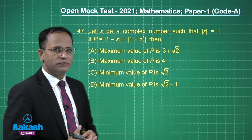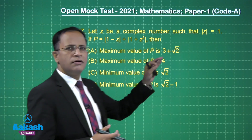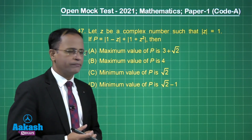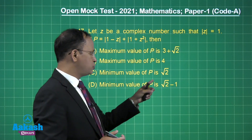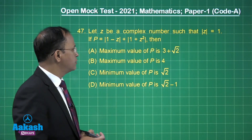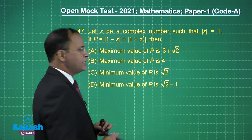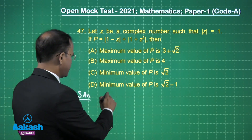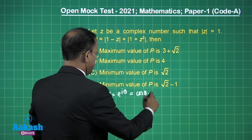Now students, let us talk about this problem — a very interesting problem based on complex numbers. You have been given a complex number z such that modulus of z equals 1. Then p = |1 − z| + |1 + z²|. We have to find the maximum value of p: options are 3 + √2 or 4; and minimum value of p: options are √2 or √2 − 1. The easiest method here is to convert it in terms of theta, taking z = e^(iθ).